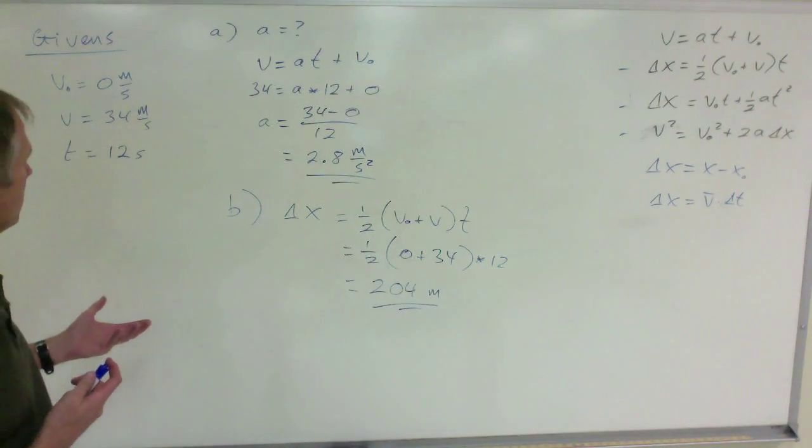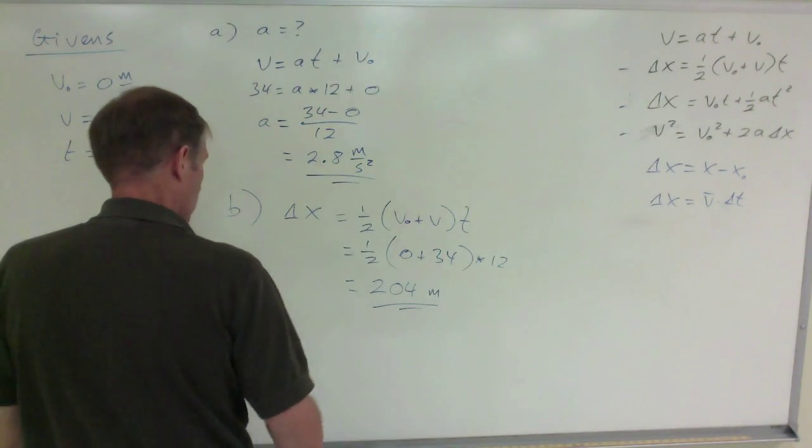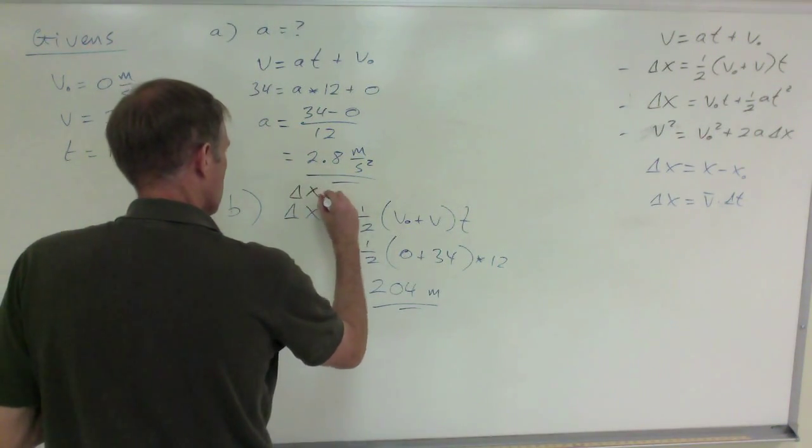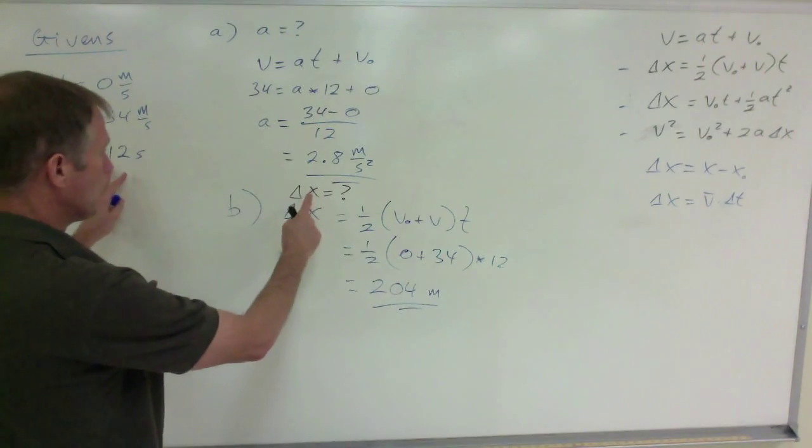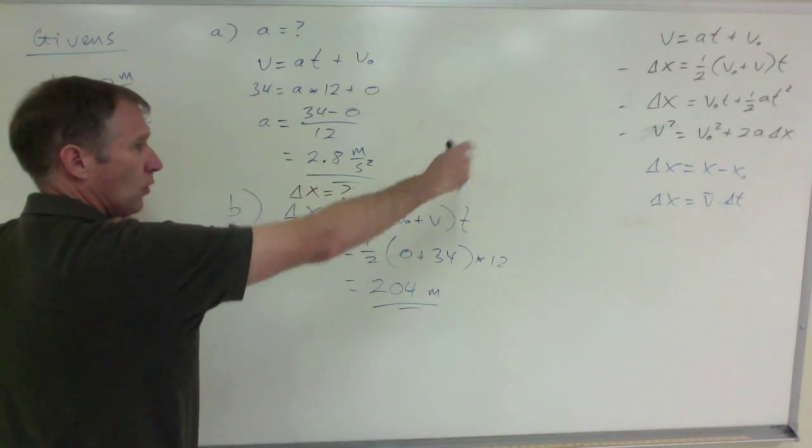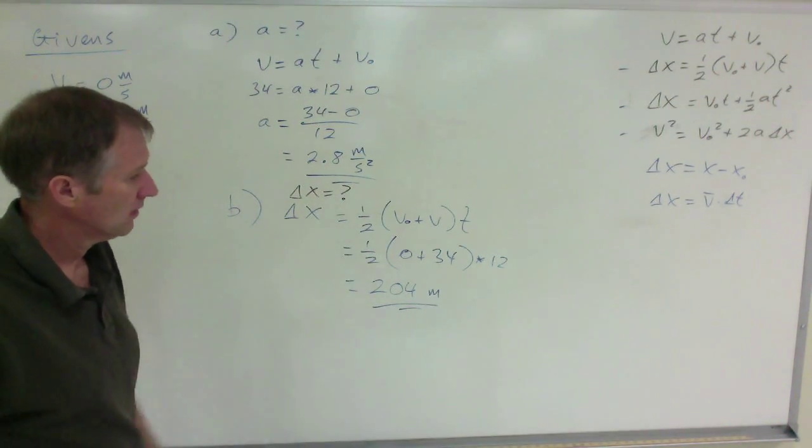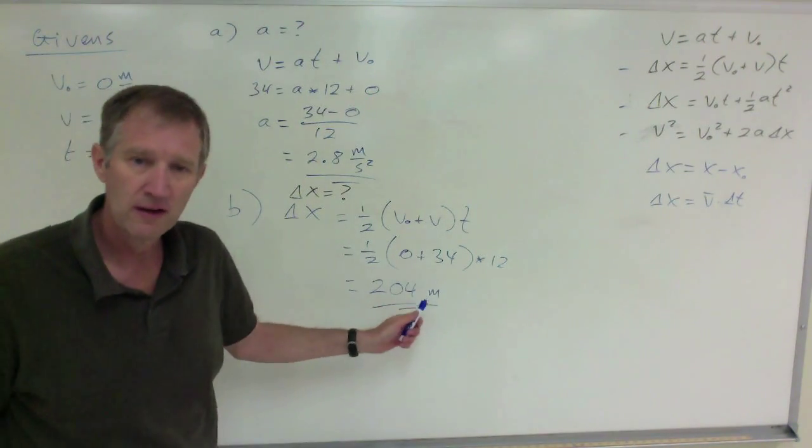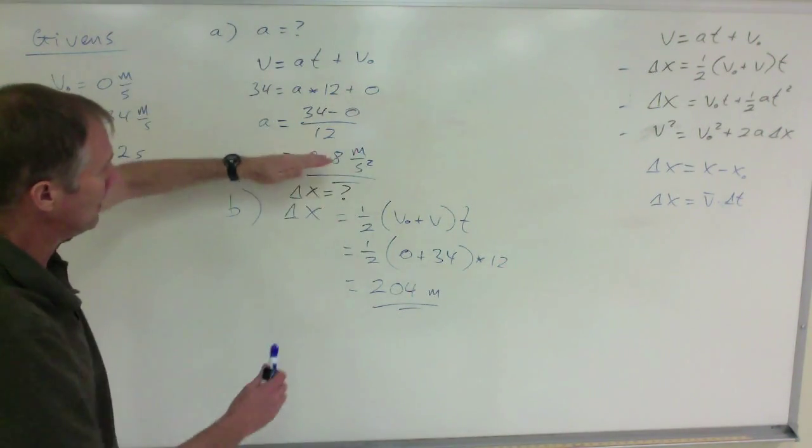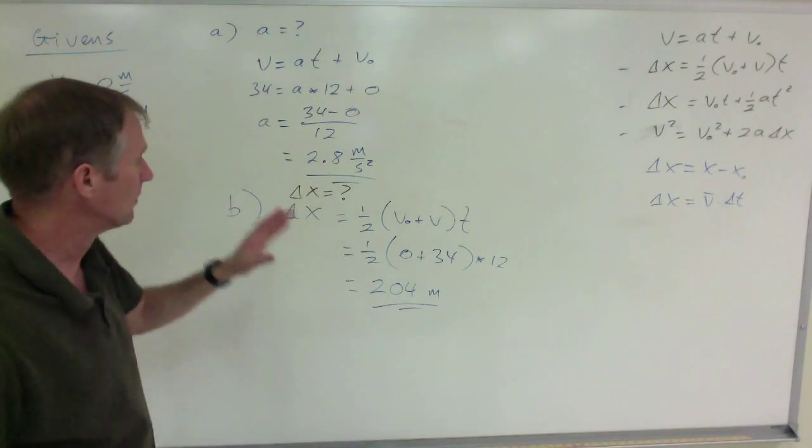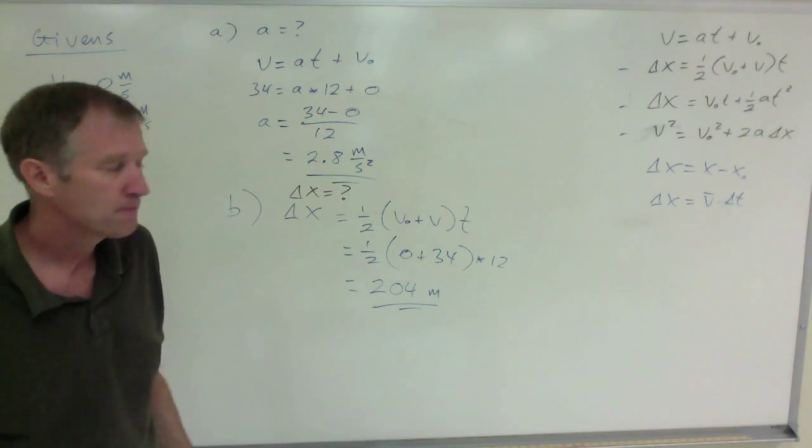So that's how we do these questions. Write down your givens. Write down what you're looking for: acceleration, displacement. Match your variables, givens and unknowns, to your equations that you have, your bank of equations. Write down the equation you're going to use. Put in the numbers, and then come up with the answers. And don't forget to put in the units. Again, I am more interested in the process than the answer. I'm interested in the answer, but I'm more interested in the process that you go through, the format to get to that answer. And don't forget the units.